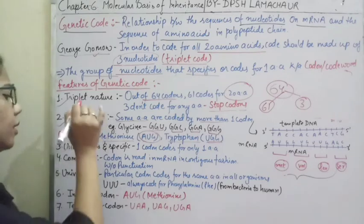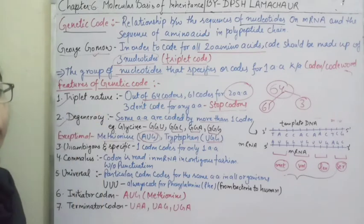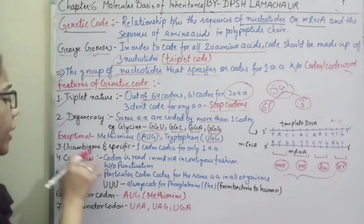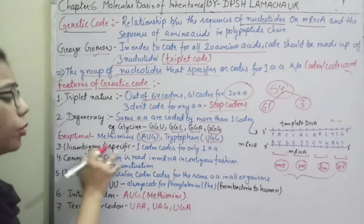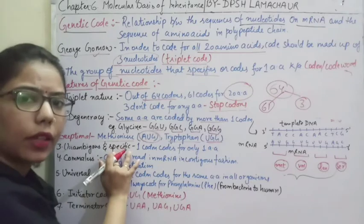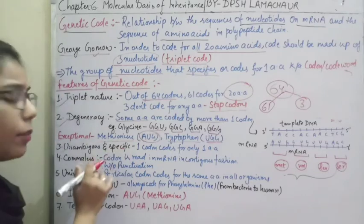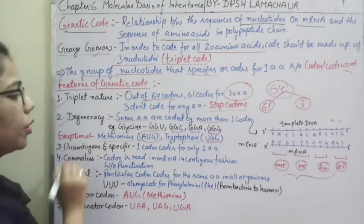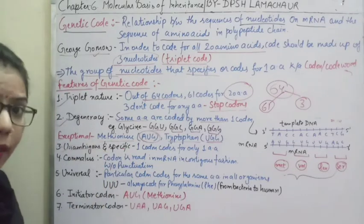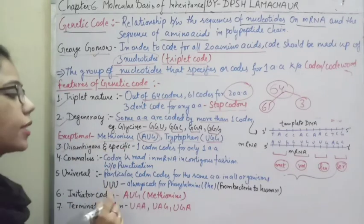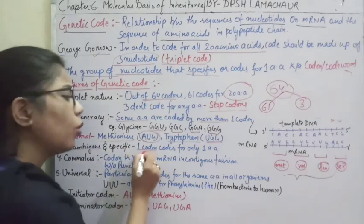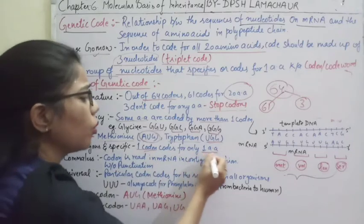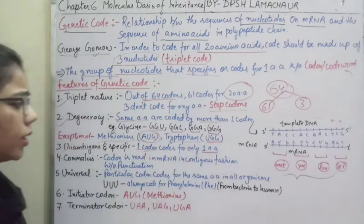The third feature of the genetic code is that it is unambiguous and specific. This means one codon codes for only one amino acid. Each amino acid will have its own specific codon.